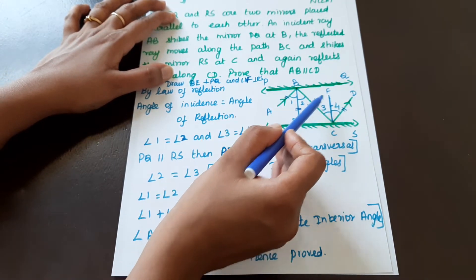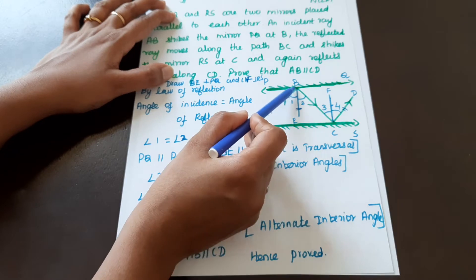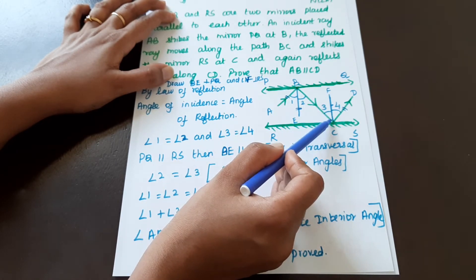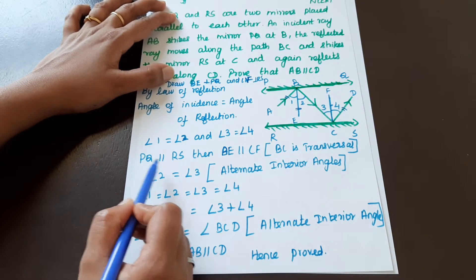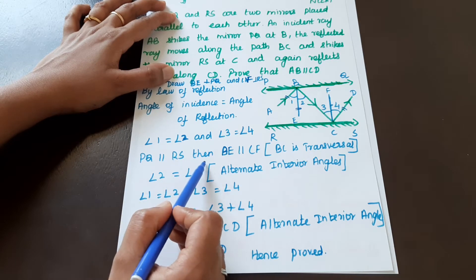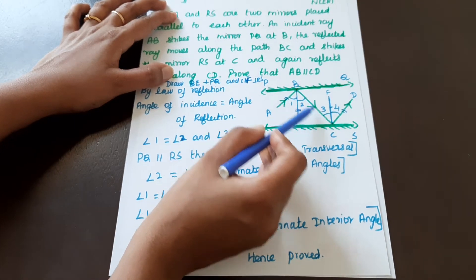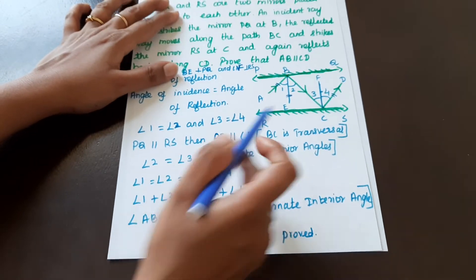Now, BE and CF are parallel because PQ is parallel to RS. BC is the transversal.